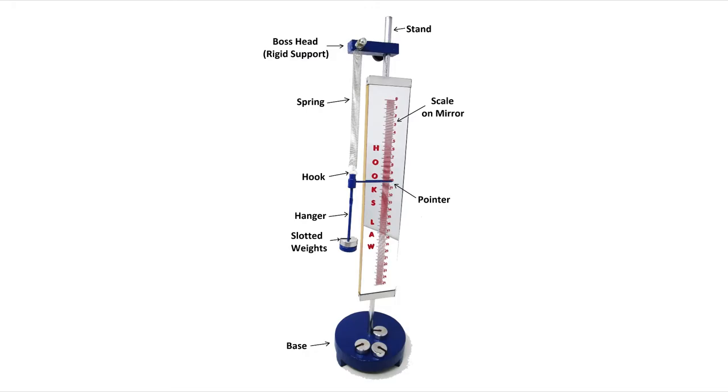Hooke's law apparatus consists of a stand with base. There is a boss and clamp attached to the stand. The linear spring is hanging from the rigid support which is called boss head parallel to the stand.